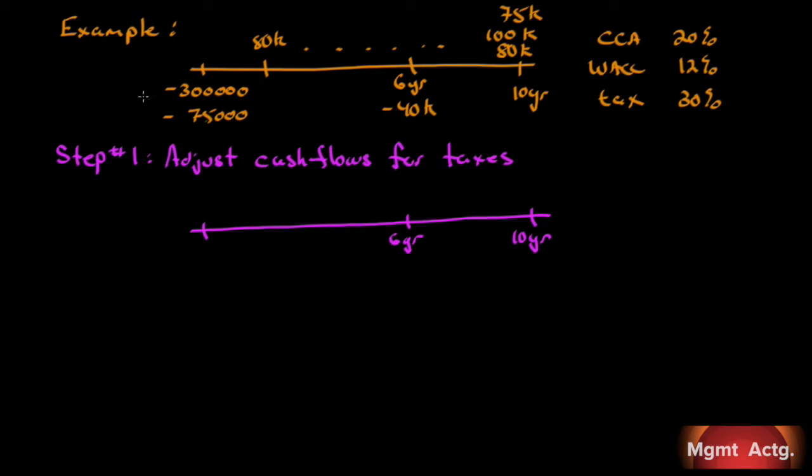Here's our example, the same one written in the book. We can buy an asset for $300,000 today, which would also require us to increase our working capital accounts by $75,000. The asset will have a 10-year useful life, after which it will be sold for $100,000.